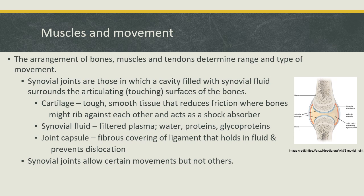Let's talk about joints in more detail. Joints are where we have moving connections between bones, muscles, and tendons. Synovial joints are the ones we'll focus on most. They have cavities filled with synovial fluid, which helps to prevent bones from scraping against each other. Articulation is where bones come together — we don't want bone scraping against bone. It's painful and it wears down the bone. So we've got a bunch of structures in the joint to help protect that articulation where those bones come together.